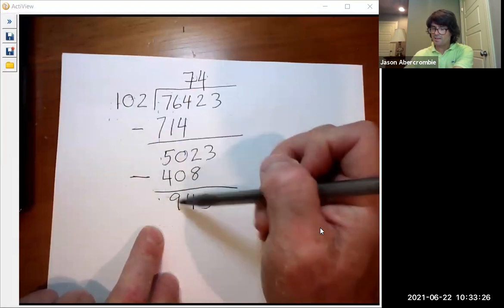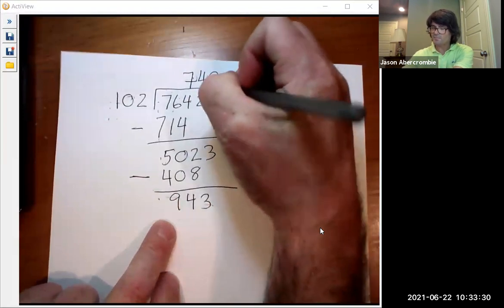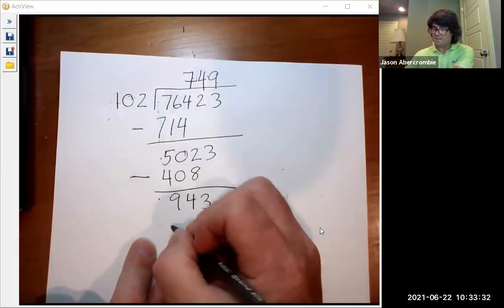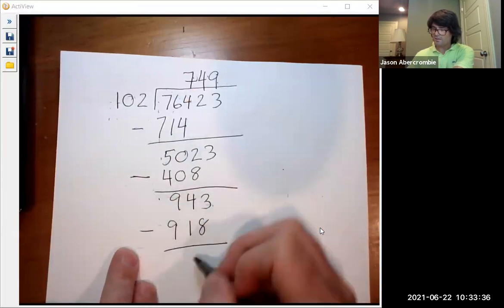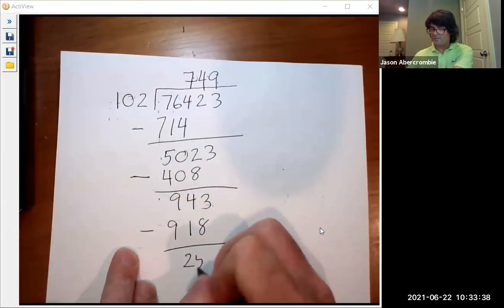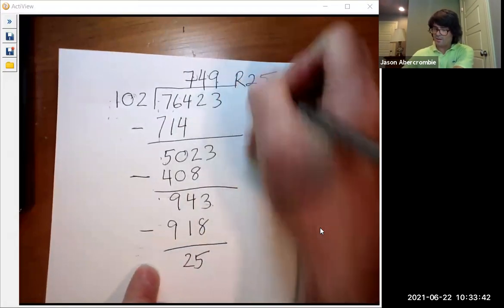And does 102 go into 943? I guess it goes in 9 times. 9 times 102 is 918. Subtract. And you've got leftover 25. And since 102 doesn't go into 25, that's your remainder 25.